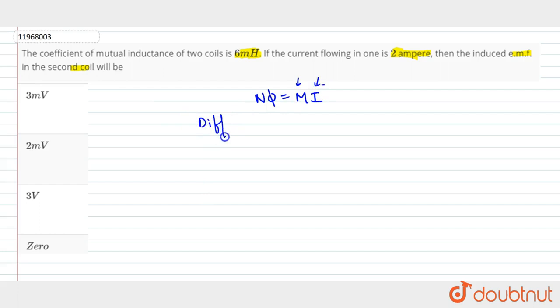So I will differentiate with respect to time. d(N phi) by dt is equal to M constant, so we will have M times di by dt.